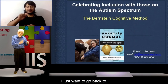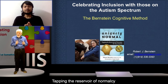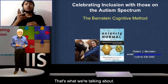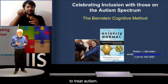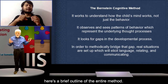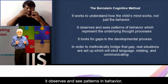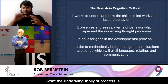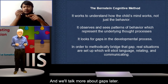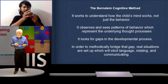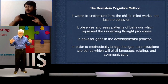I want to go back to the book called 'Uniquely Normal' — specifically the subtitle: 'Tapping the Reservoir of Normalcy to Treat Autism.' That's what we're talking about. Here's a brief outline of the entire method: it works to understand how a child's mind works, not just the behavior; it observes patterns of behavior which represent underlying thought processes; it looks for gaps in the developmental process; and then real situations are set up to bridge the gap and elicit language, relating, and communicating.